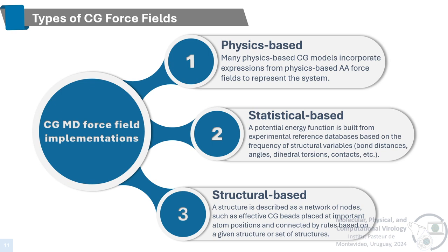We have three types of force field implementations: physics-based, statistical-based, and structure-based. In physics-based models, coarse-grained models incorporate expressions from physics-based all-atom force fields to represent the system. In statistical-based models, the energy function is built from experimental reference databases based on frequency of structural variables. In structure-based models, a structure or set of structures are used to help the positioning and connecting of the beads based on their native importance. Some force fields use hybrid versions that combine one or more of these implementations.